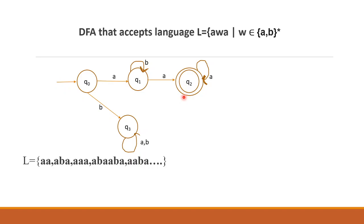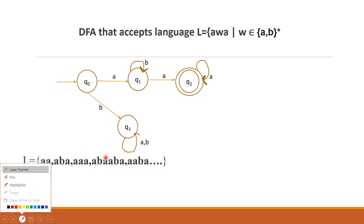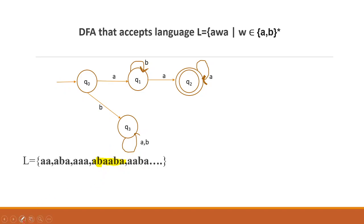If 'b' comes after Q2, we cannot accept yet — there is still a possibility of more characters. Consider the example string 'ababa'. Starting from Q0: 'a' takes us to Q1, then 'b' loops on Q1, then 'a' takes us to Q2, then 'b' — wait, if B comes, we go back to Q1. Then the final 'a' brings us to Q2. So this string is accepted.